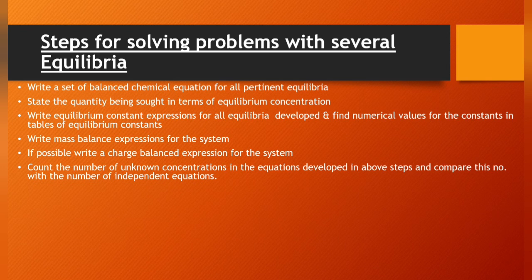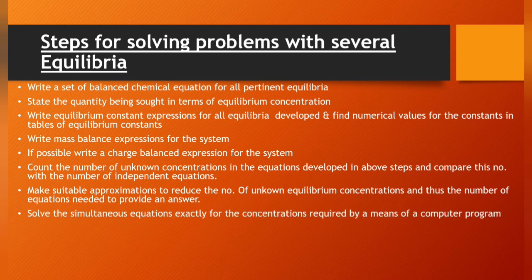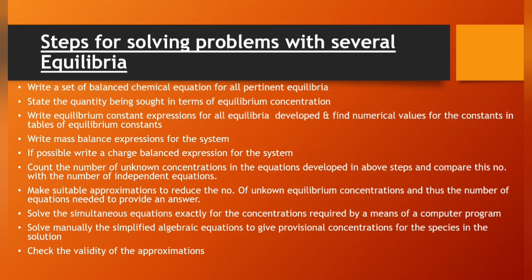Count the number of unknown concentrations in the equations developed in above steps and compare this number with the number of independent equations. Make suitable approximations to reduce the number of unknown equilibrium concentrations and thus the number of equations needed to provide an answer. Solve the simultaneous equations exactly for the concentrations required by means of a computer program. Solve manually the simplified algebraic equation to give provisional concentrations for the species in the solution, and finally check the validity of the approximations.